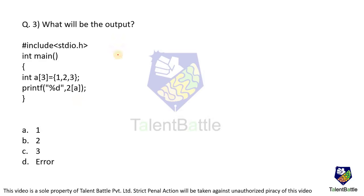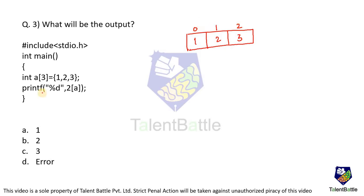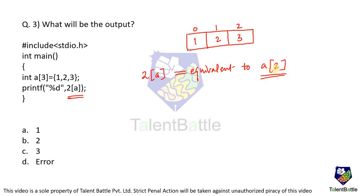Next question: a code snippet in C is given and you have to identify the output. An array is given with three elements — 1, 2, 3 — and array index starts from zero: indices 0, 1, 2. They are printing using `%d` with `2[a]`. If you understand arrays properly, writing 2[a] is exactly equivalent to a[2]. So a[2] means index position 2, and the element there is 3.